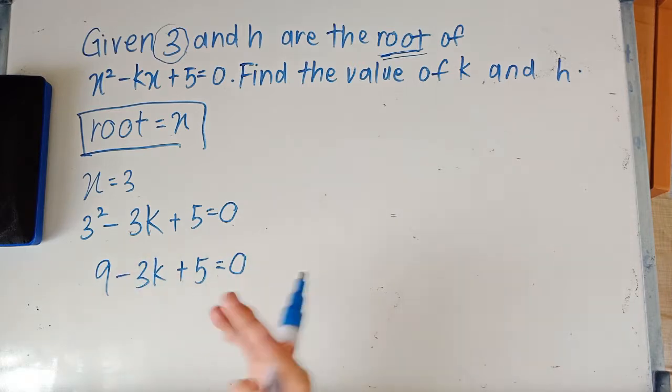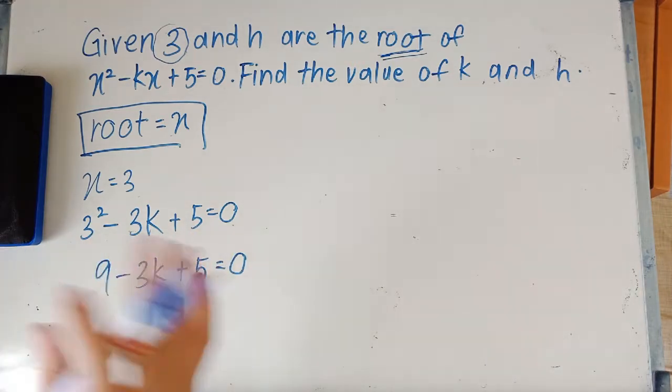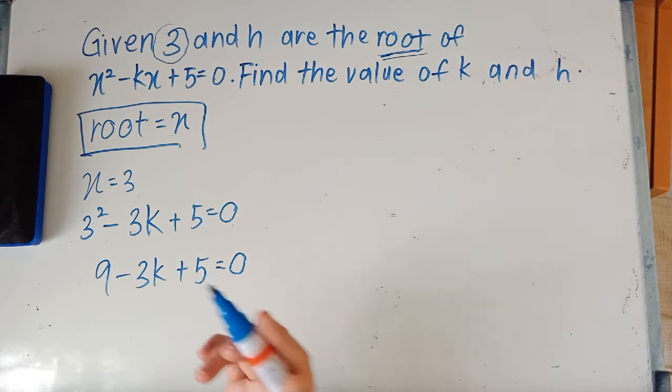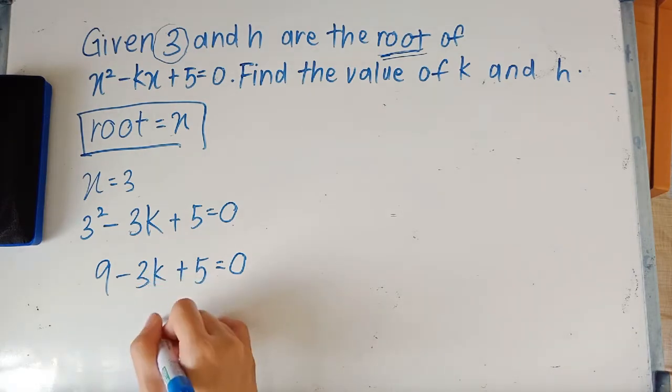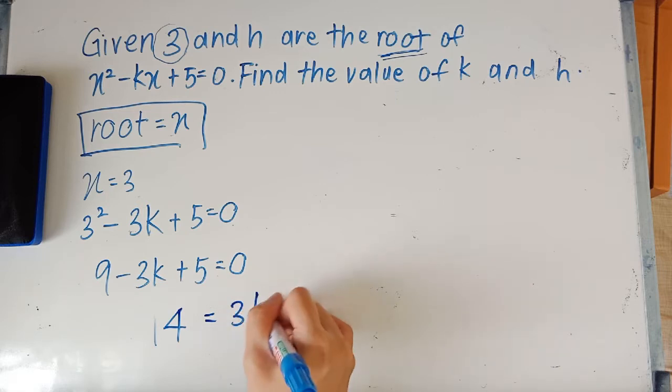So when you have k and when you have a number, it's so easy. Just move all the unknowns to one side or the numbers to the other side and you will get your answer. So we'll have 14 here equals to 3k and k = 14/3.